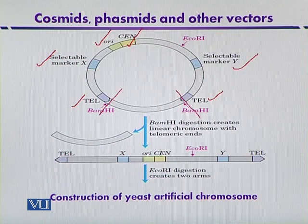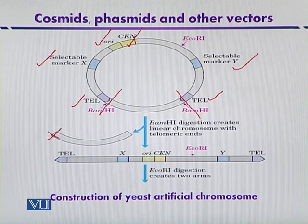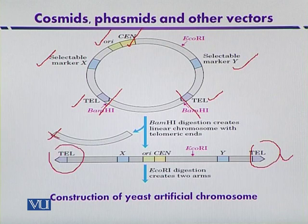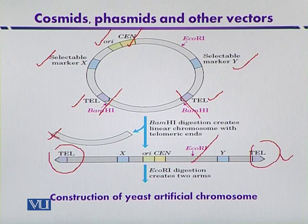One can digest the YAC with BamHI, so this fragment of DNA is discarded. In the next step, you get a linear yeast artificial chromosome that is flanked by regions of DNA called telomeres. In the following step, it is further digested with EcoRI enzyme so that the left arm and right arm get separated.